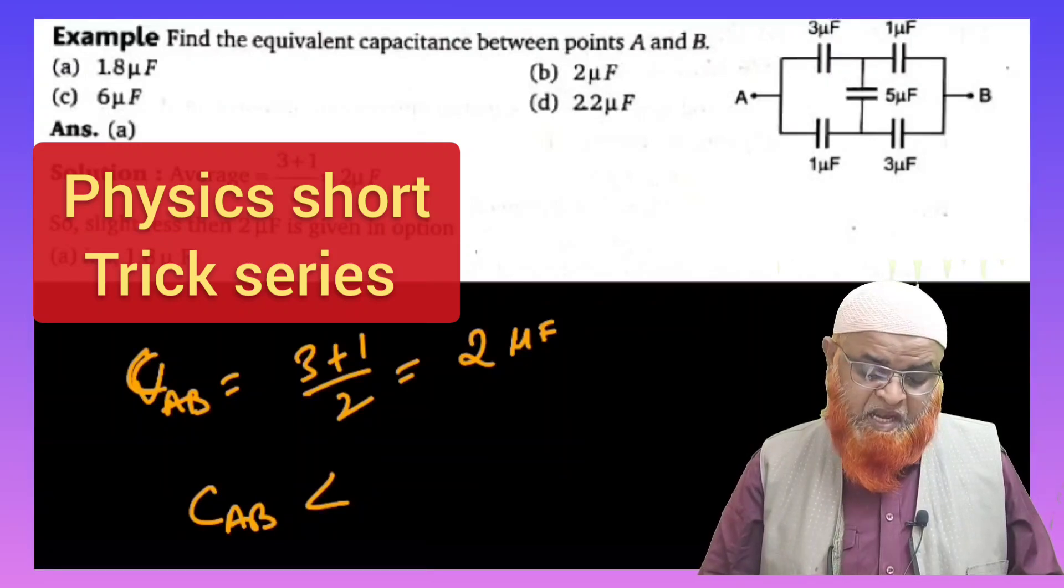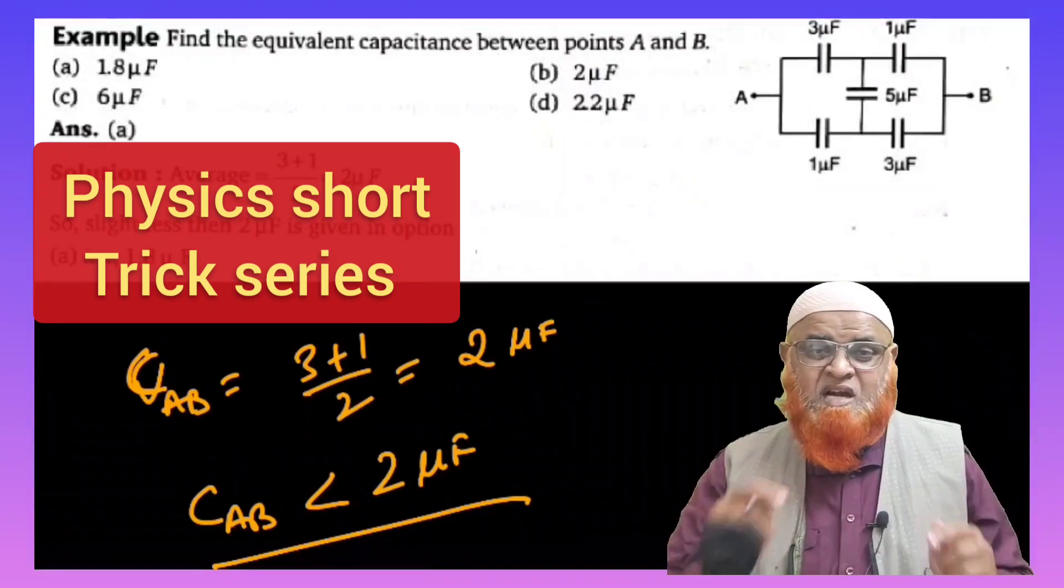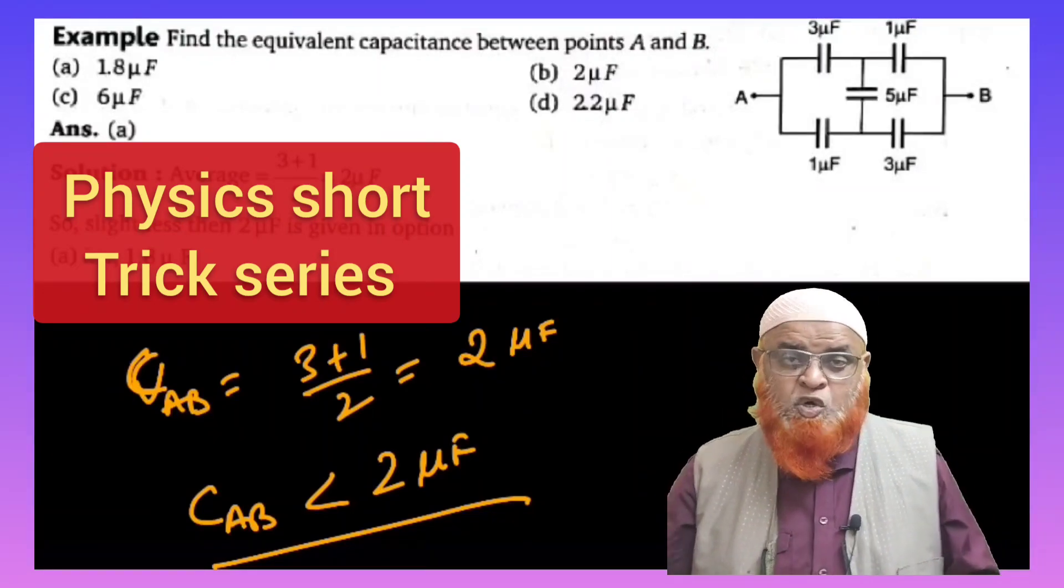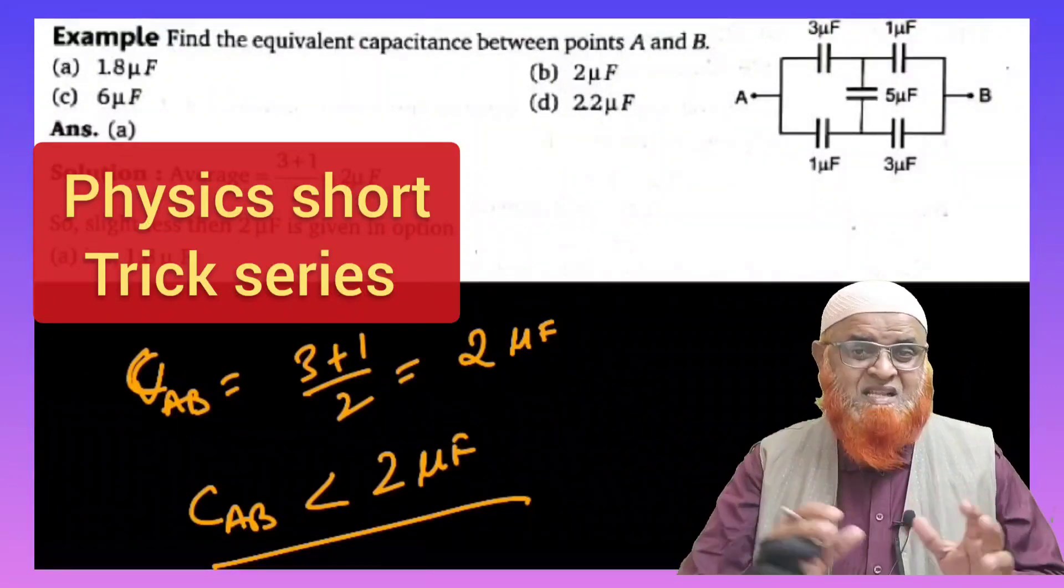...should be not exactly equal to the average. It should be less than the average of these two. This condition you have to remember. So equivalent capacitance will not be exactly average; it will be a little bit lesser than the average.